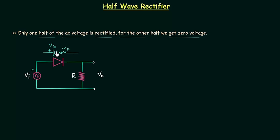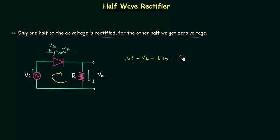This is the polarity of barrier potential and let's say current through resistance R is equal to I. I will use Kirchhoff's voltage law to obtain current I. We have VI minus VB minus I·Rd minus I·R equal to zero. So current I is simply equal to VI minus VB divided by Rd plus R.